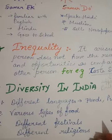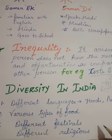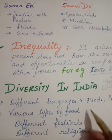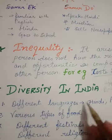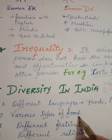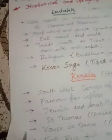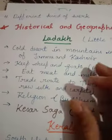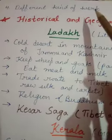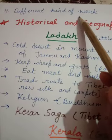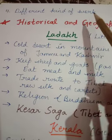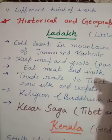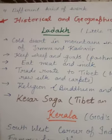Religions in India include Hindu, Muslim, Christian, Zoroastrian, Buddhist, and Jainism. These differences in language, food, festivals, and religion — along with different types of work — all make up the diversity of India.